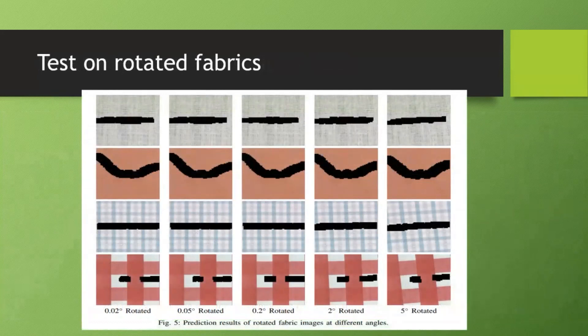Our system can work even for slightly rotated fabric images. Because in the real world, fabrics cannot align with the margins of machines all the time. To simulate such cases, we manually rotate fabric images at different angles and predict them with our system. Each column in this figure shows images rotated at a certain angle — from left to right: 0.02, 0.05, 0.2, 2, and 5 degrees. When the rotation angle increases, the prediction results get worse. However, from the visualization results, you can still see where the defects are, so our system can still work under slightly rotated fabric images.